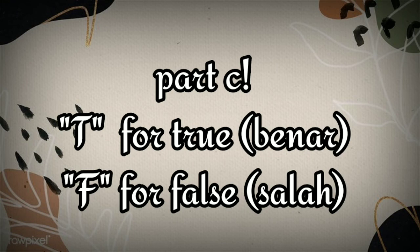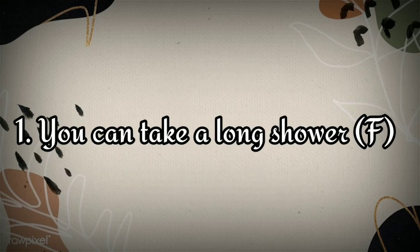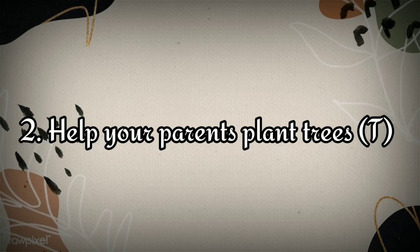Now look at part C: listen again to part B and write if it is true or false — setelah kita baca 5 rules for saving energy, kita lihat beberapa kalimat ini, manakah yang benar atau true, dan manakah yang salah atau false. Number 1: you can take a long shower — is it true or false? It's false, because we have to take a short shower. Number 2: help your parents plant trees — true or false? It's true.